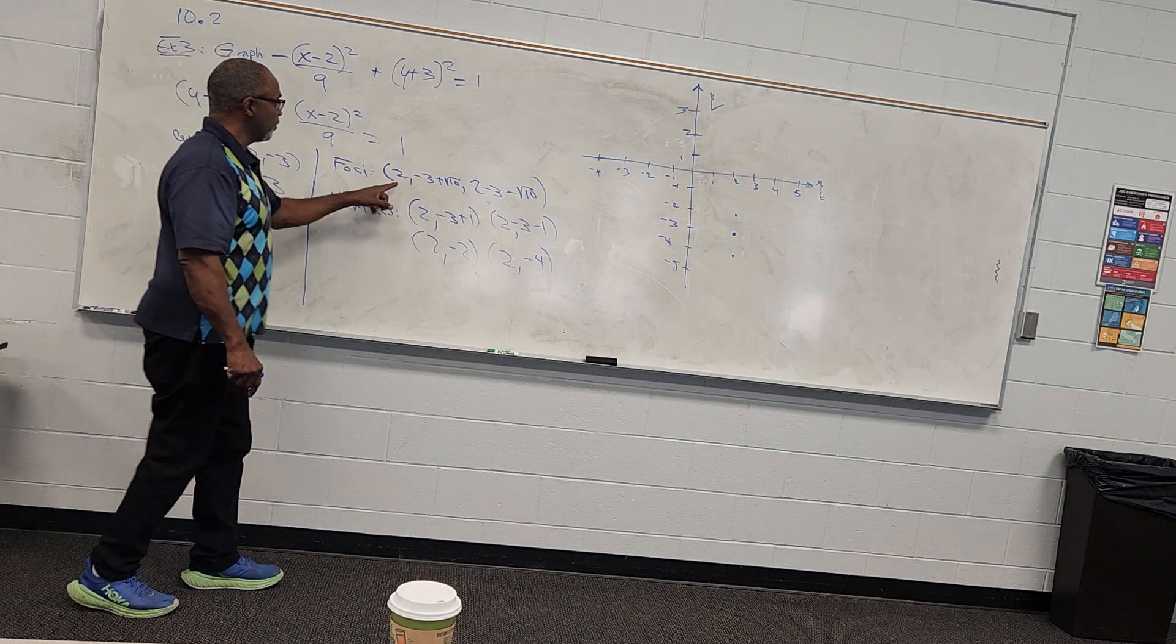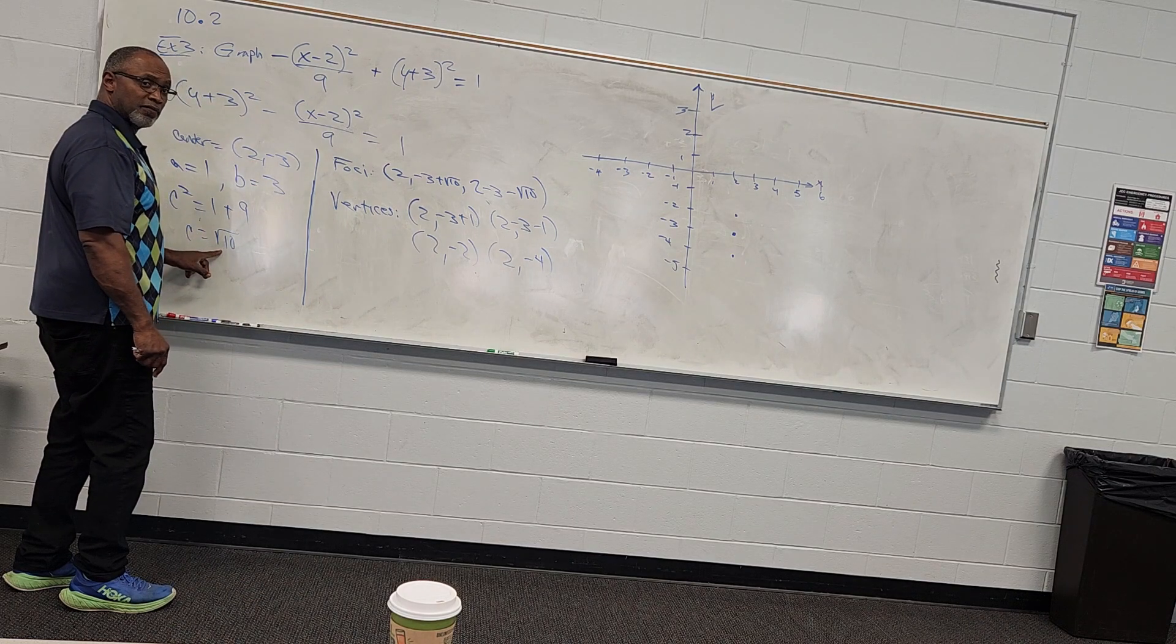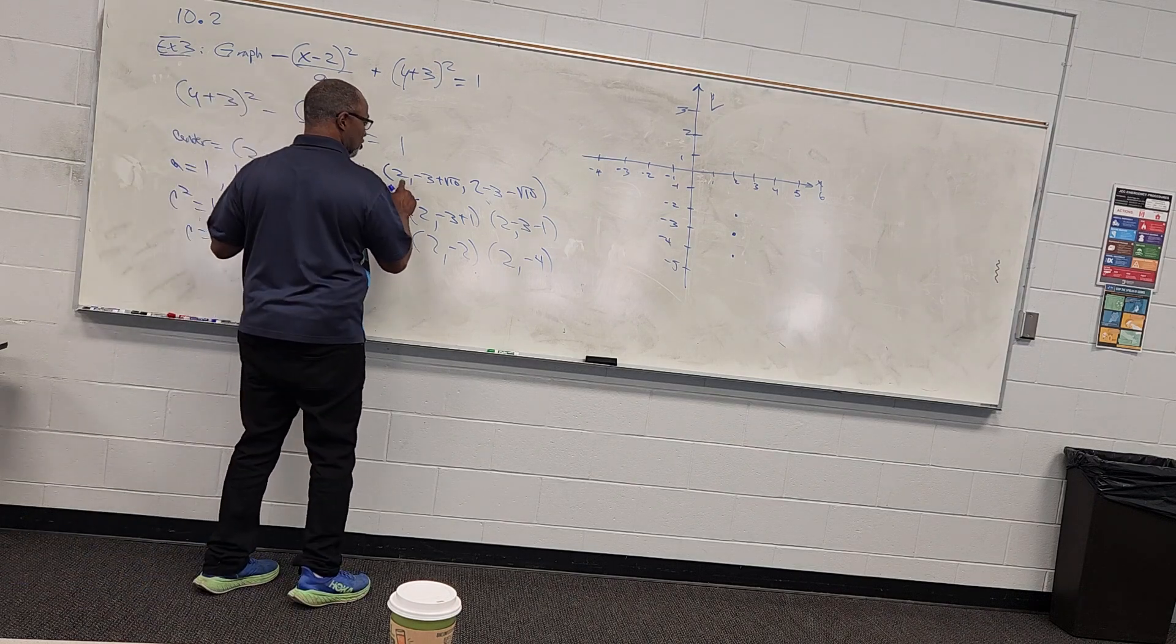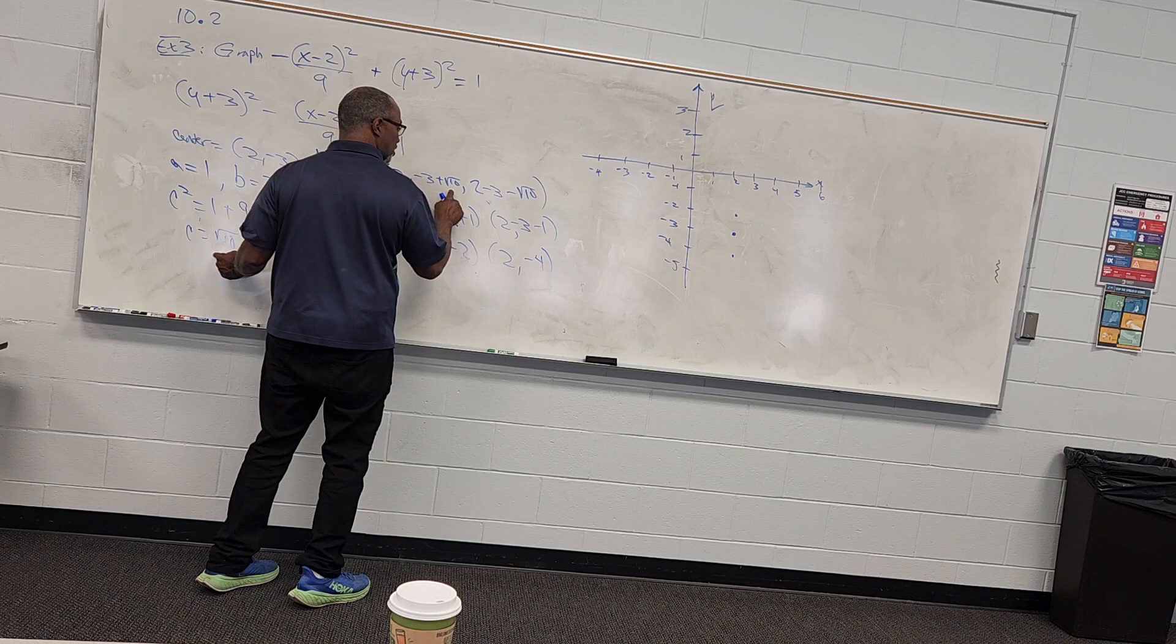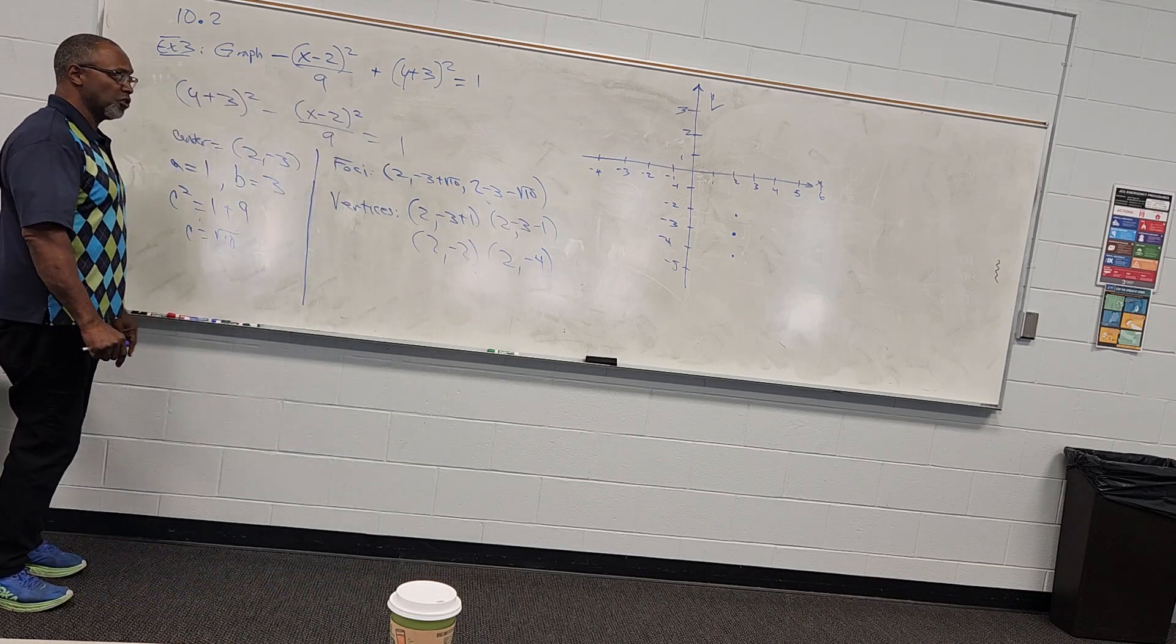The foci just start from my center, and I'll add and subtract that value of c to my y coordinate to find the foci. So my center was 2, negative 3. So it's 2, negative 3 plus square root of 10 because that's c, and 2, negative 3 minus square root of 10. You're going to add and subtract c to your y coordinate.